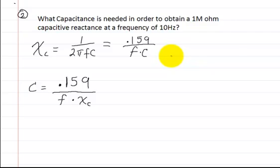So here, what capacitance is needed in order to obtain a 1 megaohm capacitive reactance at a frequency of 10 hertz? So for this one, we're going to again use this formula. The capacitive reactance is equal to, well, this right here. And I'm going to rewrite the 2 pi, the 1 over 2 pi as 0.159.